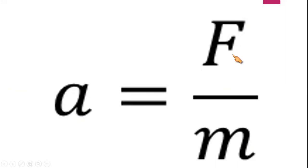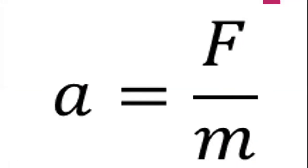As for the units: for force, we use Newton (capital N), which is equivalent to 1 kilogram meter per second squared. For acceleration, the unit is meters per second squared, and for mass, the unit is kilograms. That is what makes force a Newton — it combines kilograms (mass) and meters per second squared (acceleration).